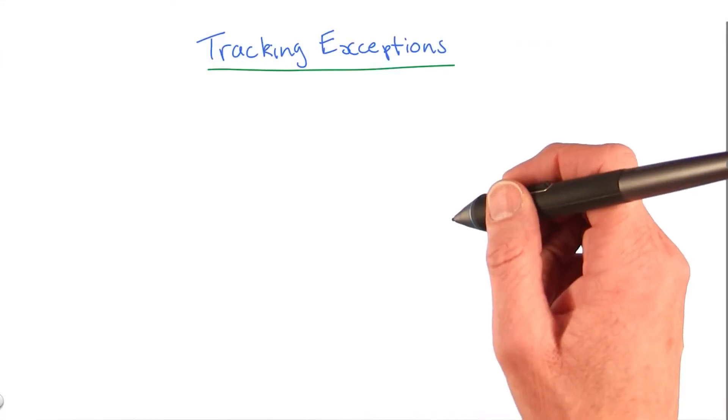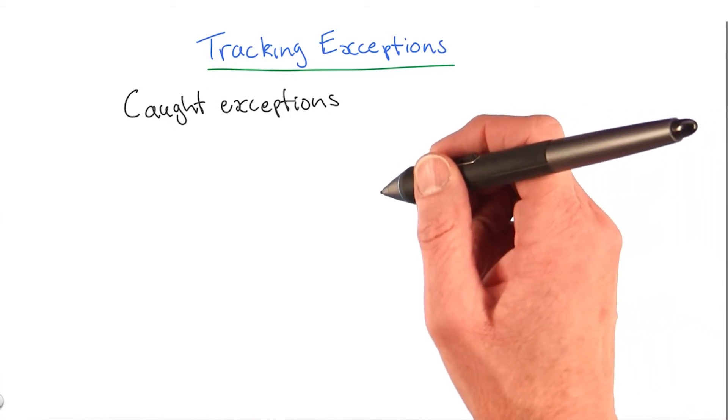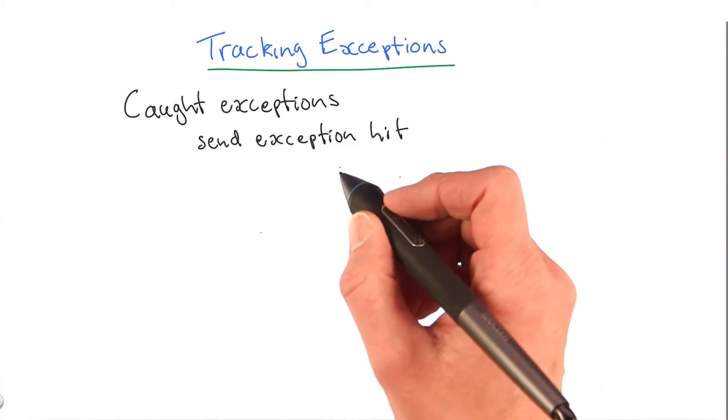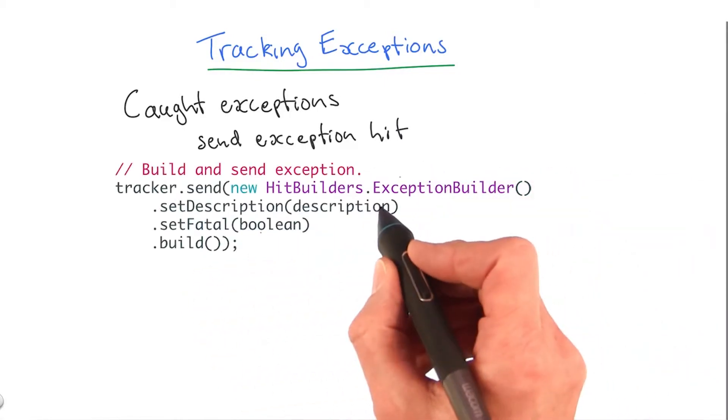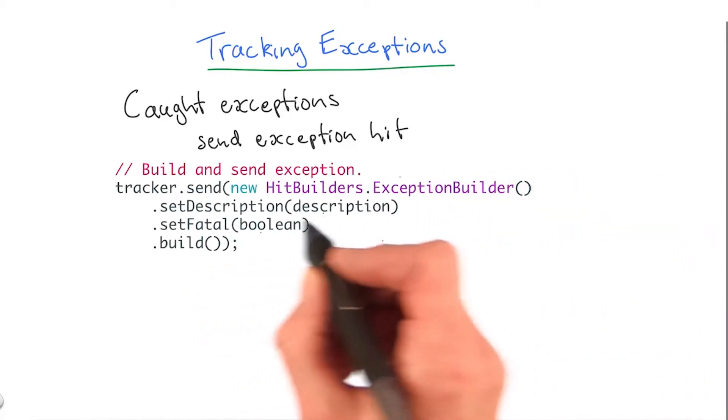You can track caught exceptions and uncaught exceptions. To track exceptions that get caught, you need to send an exception hit, and you use ExceptionBuilder to build the hit.